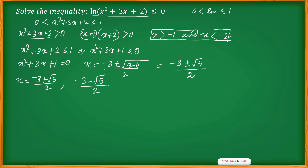Comparing with these values — there are two zeros. Checking: (-3 - √5) / 2 is less than -2, and (-3 + √5) / 2 is greater than -1.